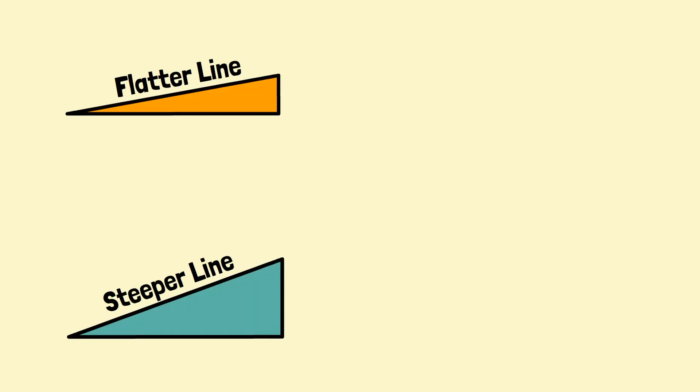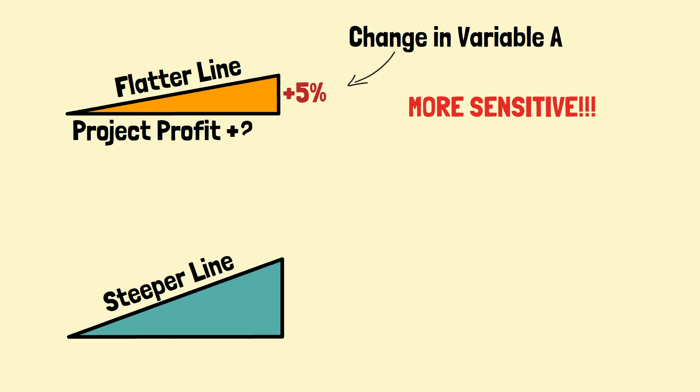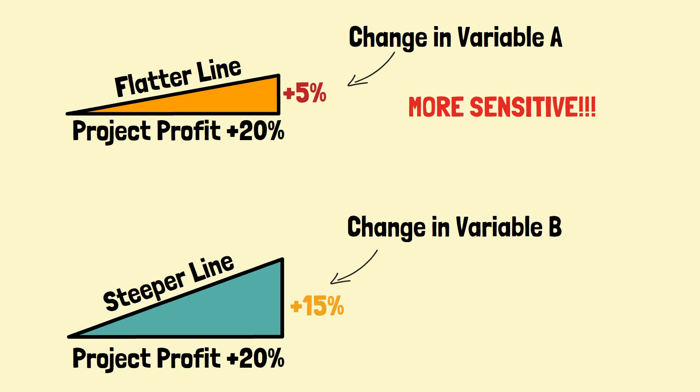Some lines are steeper, and others are flatter. In this SPIDER diagram, a flatter line represents higher sensitivity, as a slight variation in the parameter will have more impact on the profit. The lines will then help John decide which factor will need more attention.